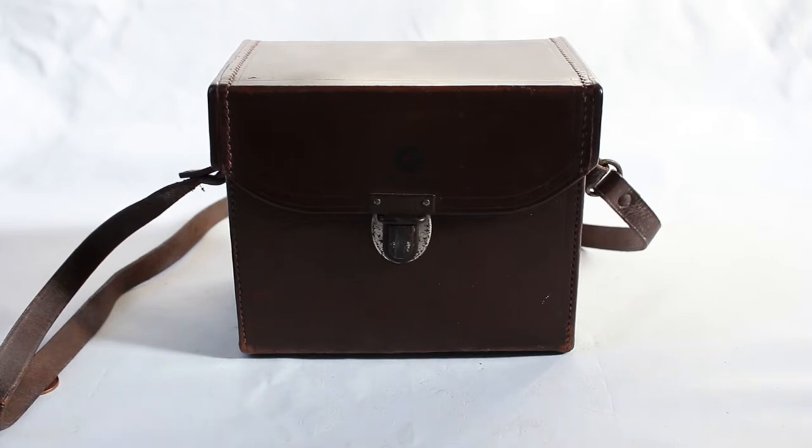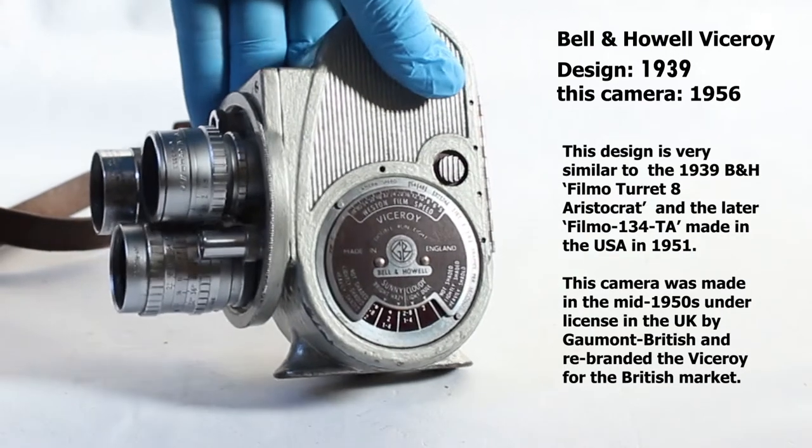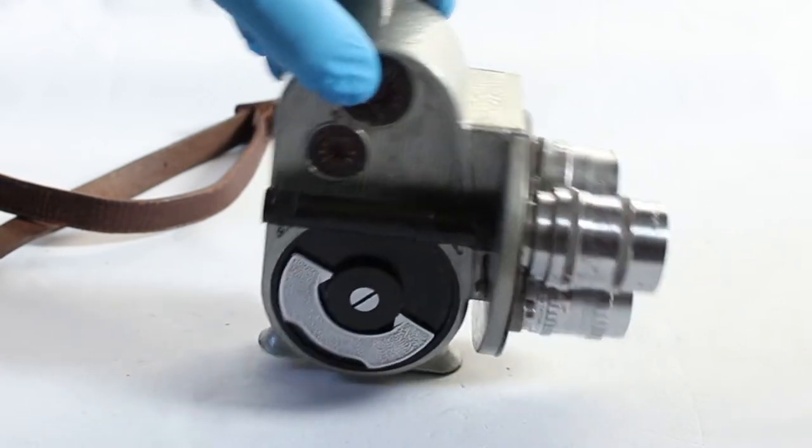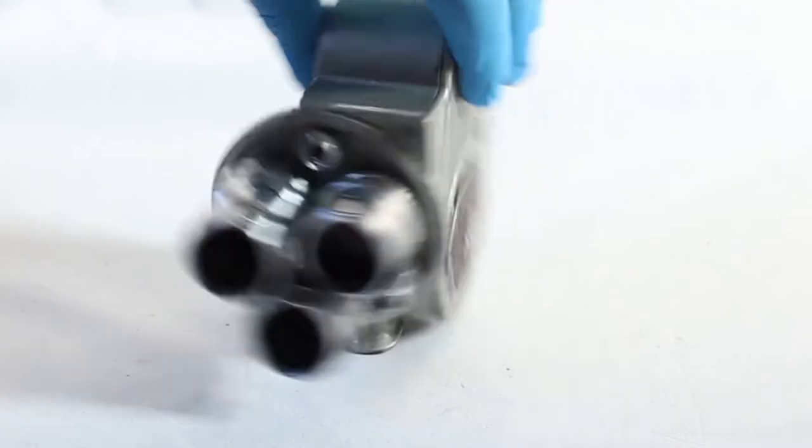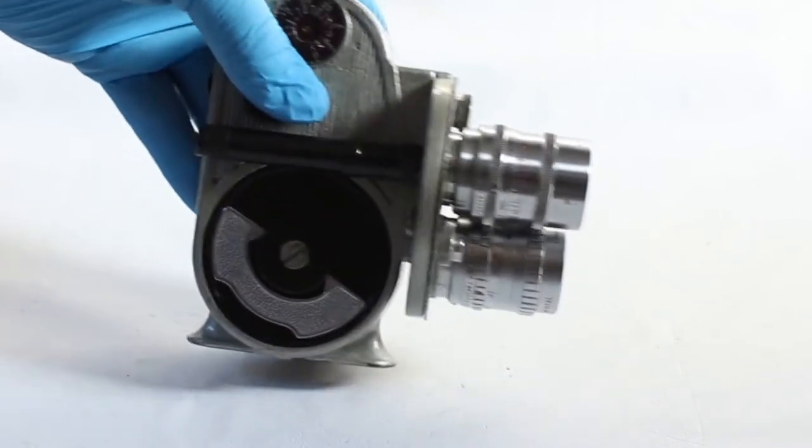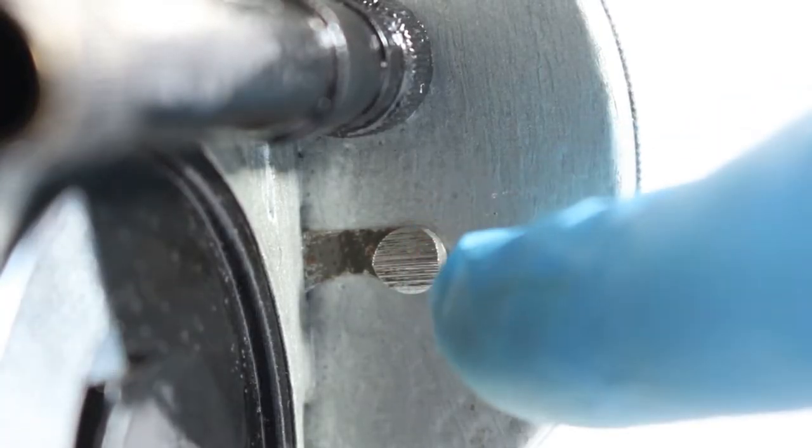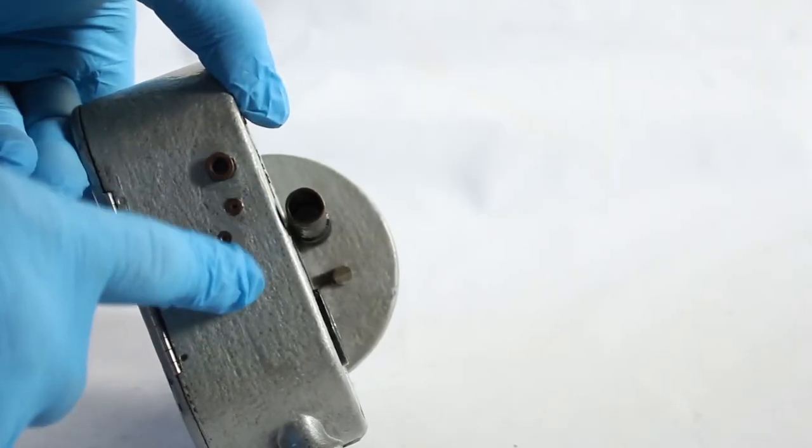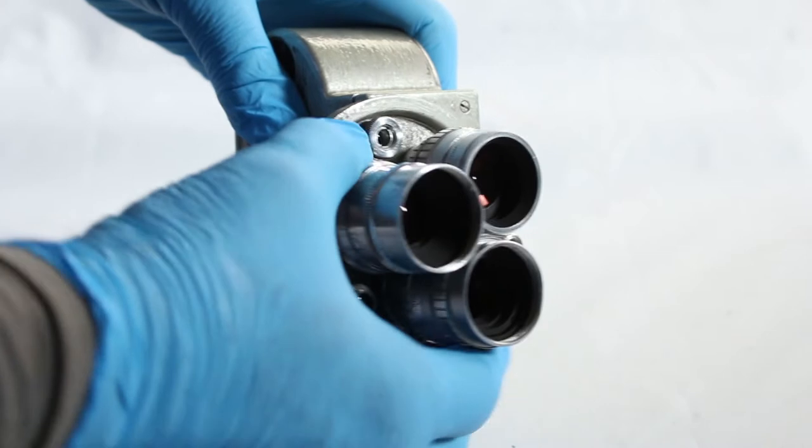Next, well what in the name of all that is holy is in this? My goodness me, it's heavy. It's a Bell and Howell Viceroy. Look at that, what a beauty. What an old clunky double 8 camera. This is heavy, you can take that to the bank. But of course being heavy means it's also very solid and still works. Let's wind it up. Over here's the shutter and you push that lever down to run and push it up for single frame.